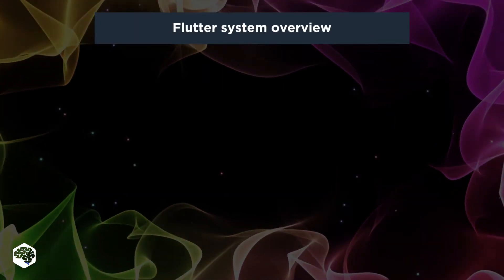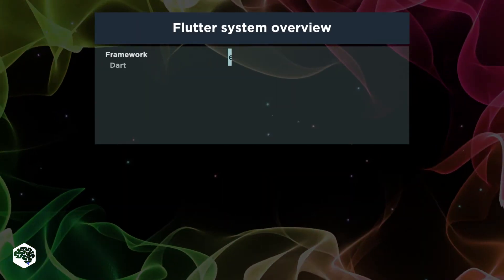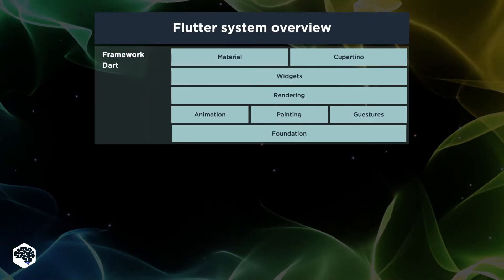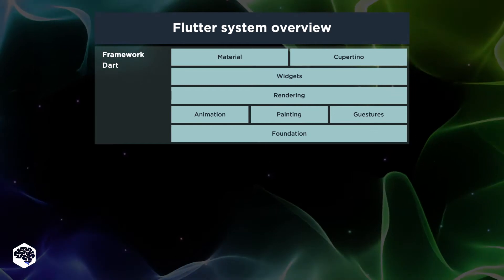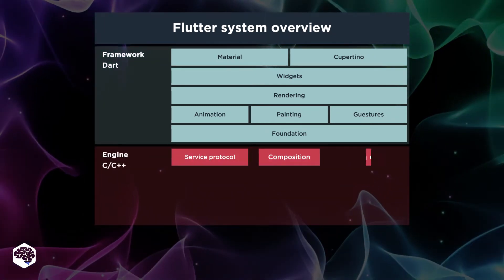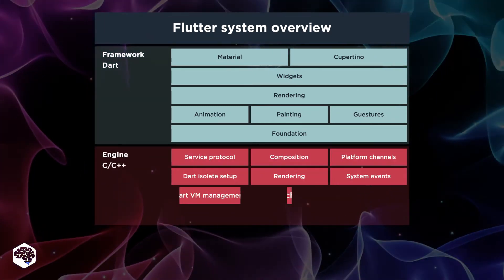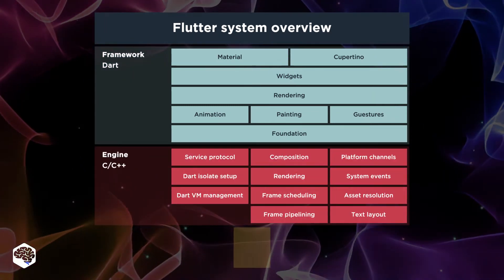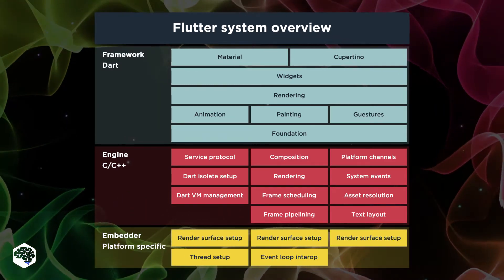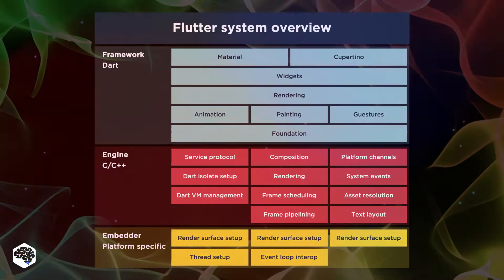The structure of Flutter is broken down into three layers: the Framework, handling app widgets, gestures, animation, and illustrations; the Flutter Engine, responsible for text display; and the Embedder, for managing plugins, packages, etc.